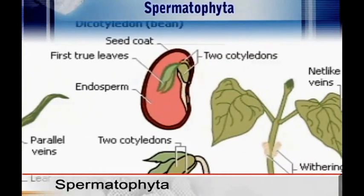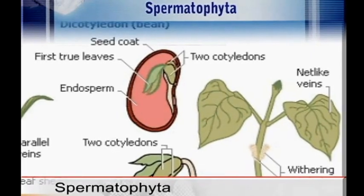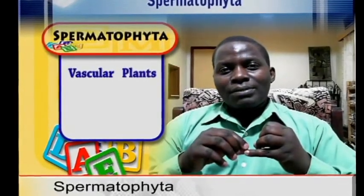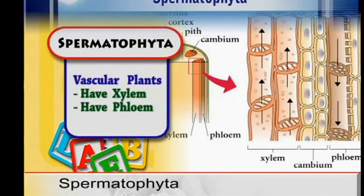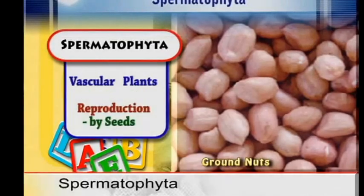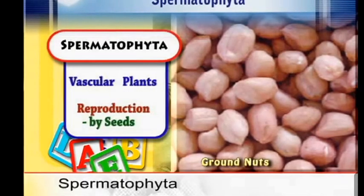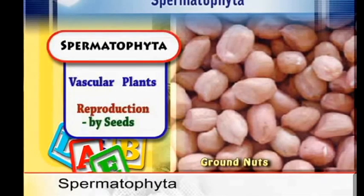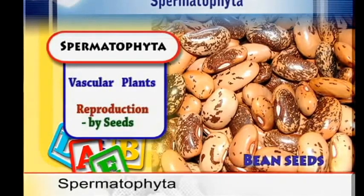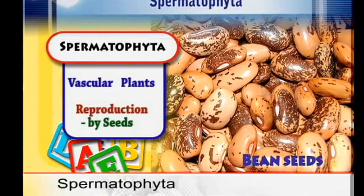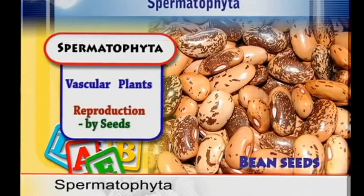The Spermatophytes are vascular plants. They are plants that have the xylem and also the phloem. They are plants that reproduce themselves by means of seeds — that implies that they have seeds, and therefore they are Spermatophytes. The Spermatophytes are further subdivided.